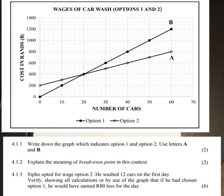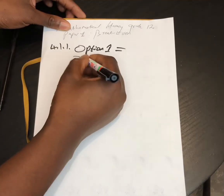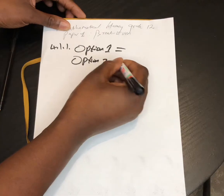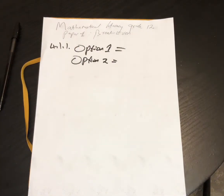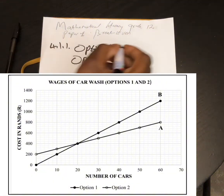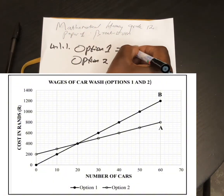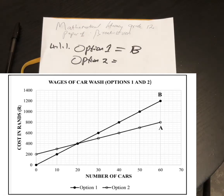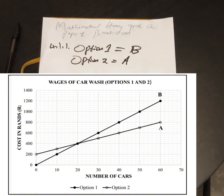Option 1 is graph B — if you don't work, you receive nothing, and the graph begins at zero. Option 2 is graph A — they give you a fixed amount of 200 rand before you begin to work, so that graph begins at 200.